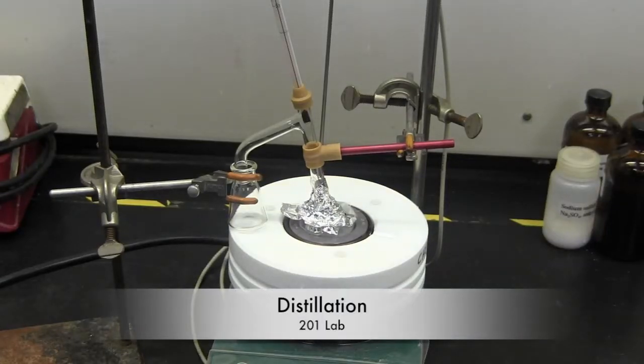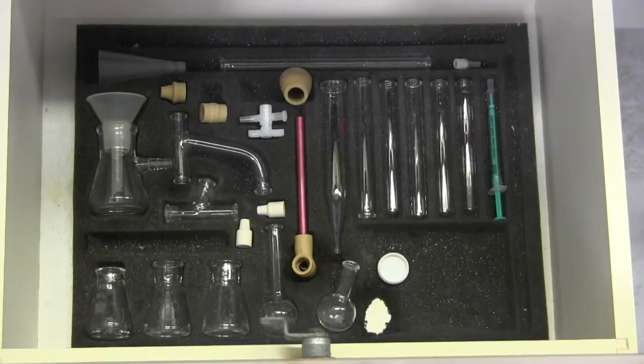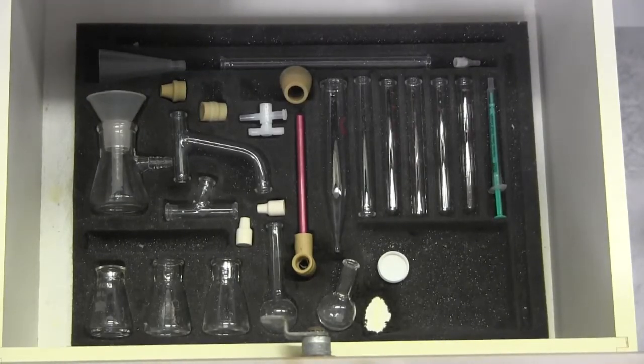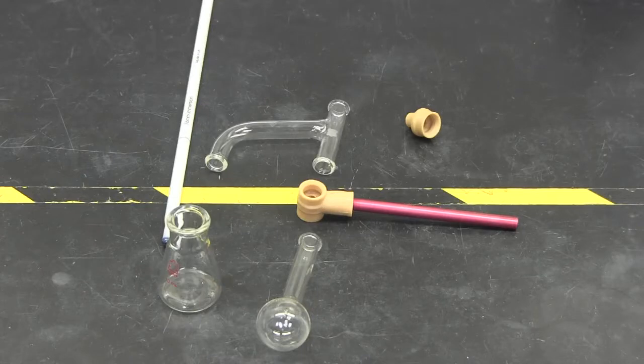In this lab, you will use distillation to separate your unknown from an impurity. You will be using the non-condenser distillation kit in your drawer for this lab. You will also need a glass thermometer and aluminum foil.